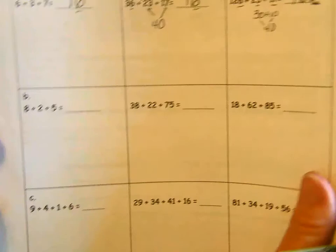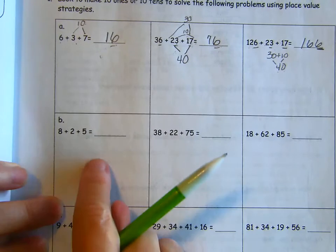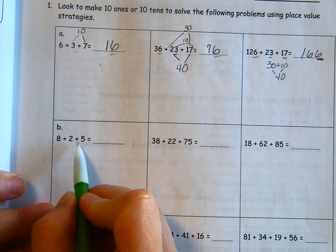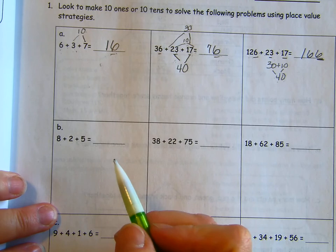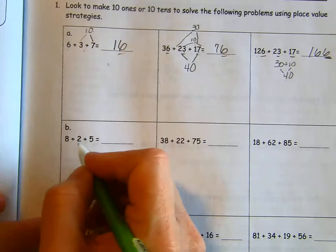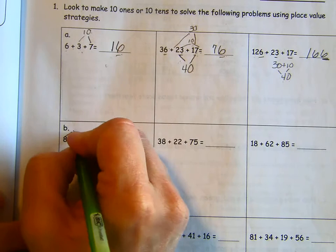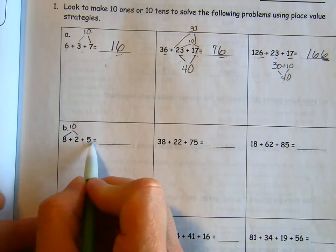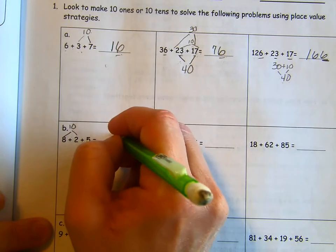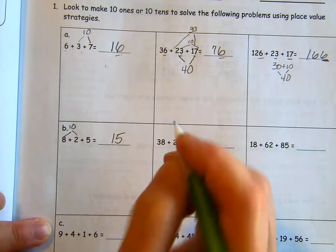Okay, let's look at B. We're going to do the same thing. We're going to go across and use what we learn. So we have 8 plus 2 plus 5. Where can you make a 10 there? It's 8 and 2. 8 and 2 are friends of 10. So we have 10 plus 5. Or 1 ten 5. 15.